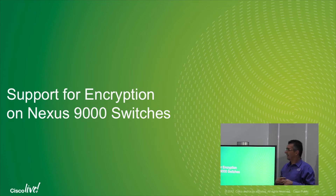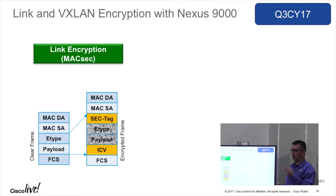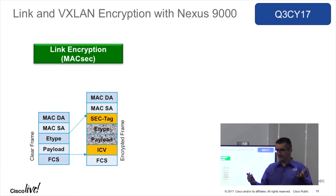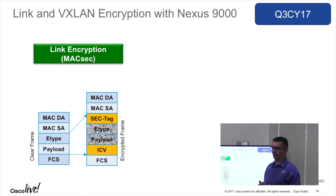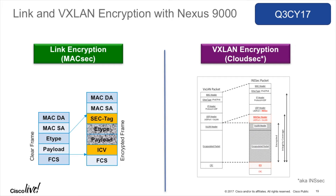Another thing that will come is support for encryption. We essentially have two encryption types in the next release: link encryption, which is MACsec — nothing new, which we have had on the Nexus 7K for quite some time — and what is new is what we call VxLAN encryption.